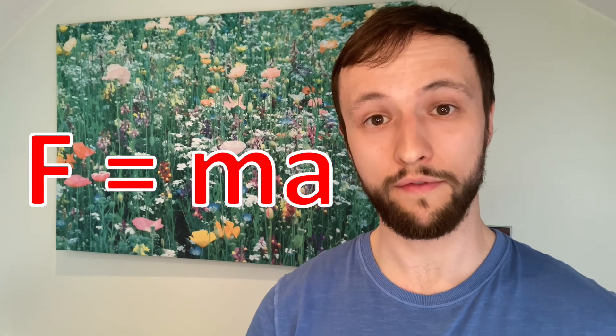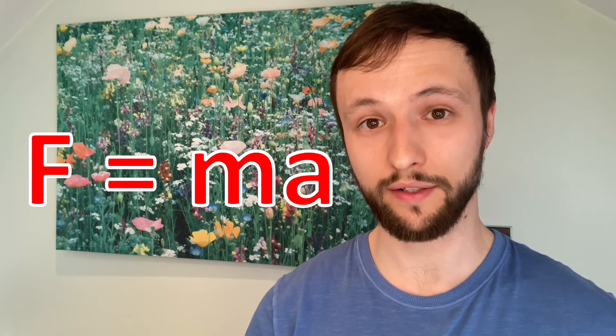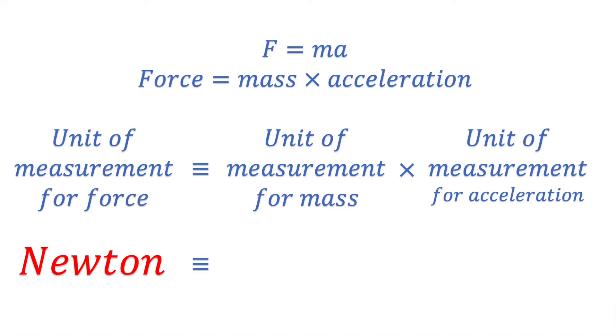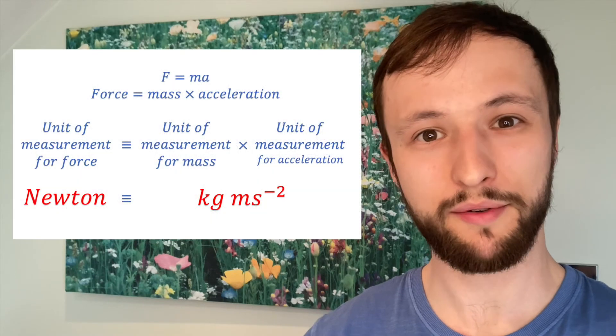Now where were we? Ah yes, Newton's second law more often than not brings this equation to mind. F equals ma, or force equals mass times acceleration. We know that the unit of measurement for force is the Newton. It is a special one after all. And so in the same way we found the unit of measurement for area and speed, the unit of force equals the units of mass multiplied by the units for acceleration. So Newton is equivalent to kilogram multiplied by meter per second squared. Kilogram meter per second squared.